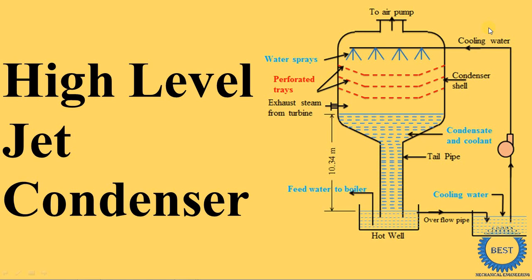In the last two videos, I explained the low-level parallel flow jet condenser and the low-level counter-flow jet condenser. In a low-level condenser, the height between the top of the condenser and the water level in the cooling water tank is less than 10 meters. But here, the height is greater than 10 meters. The water level difference between the condenser and the hot well is equal to 10.34 meters, so by default the height is greater than 10 — it is called the high level.